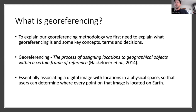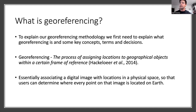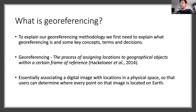First I'll explain what georeferencing actually is. A succinct definition, taken from a paper by Hacker Loa et al. in 2014, is: the process of assigning locations to geographical objects within a certain frame of reference. In other words, it means taking digital images — such as paper maps, remotely sensed data from planes or satellites, or any image with a geographical aspect — and associating it within a reference system, so the user can determine where every point and every geographical object on that image is actually located on Earth.